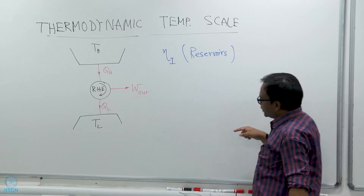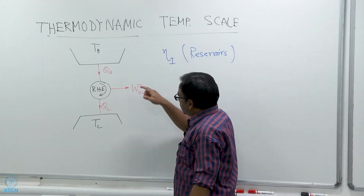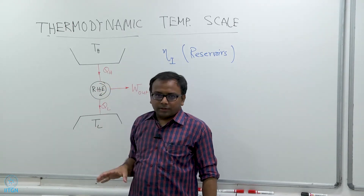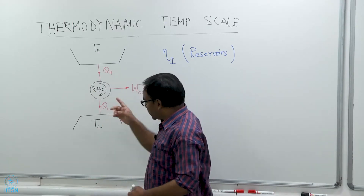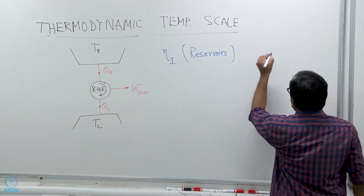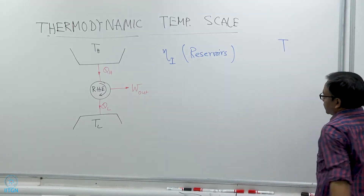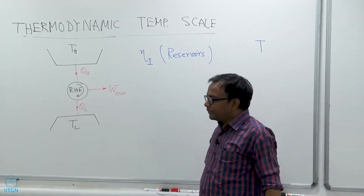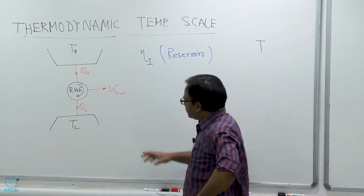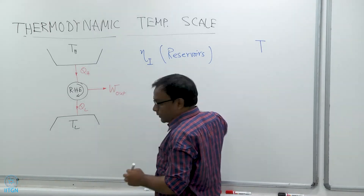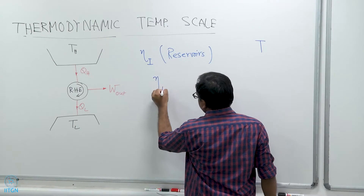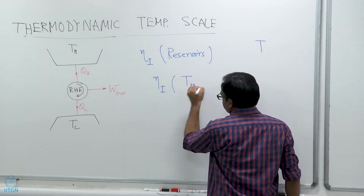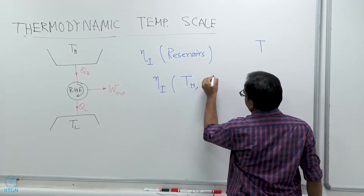Now the next question is: how do we characterize a reservoir? As far as this engine is concerned, the only property of the reservoir that matters is its temperature. A thermal reservoir is characterized by its temperature only. Which means that this efficiency, since it is a function of the reservoir only, can be written as a function of T_H and T_L.